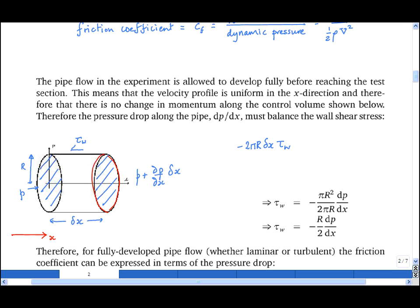The way I've drawn it, the force is in the negative x direction, hence the minus sign here. The force on the control volume due to the pressure is the pressure difference times the area over which it acts. The area is pi R squared, and the pressure difference is partial dp by dx times delta x.